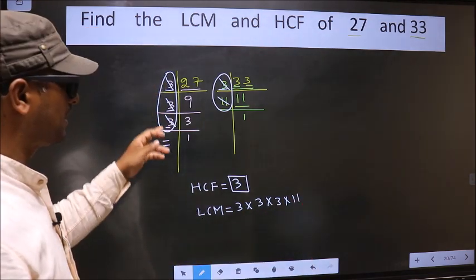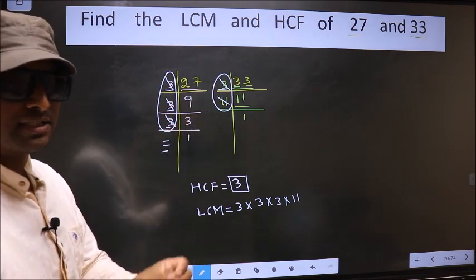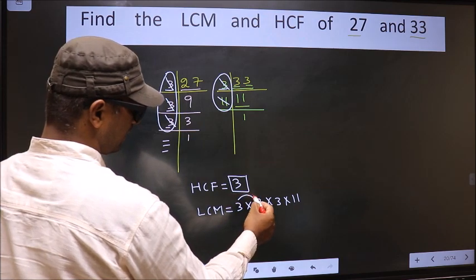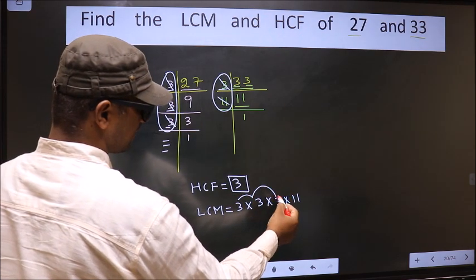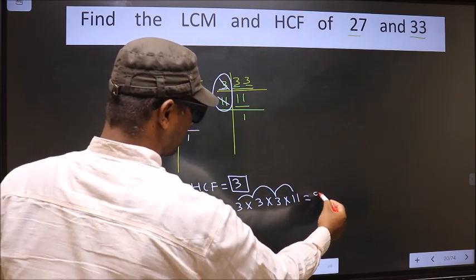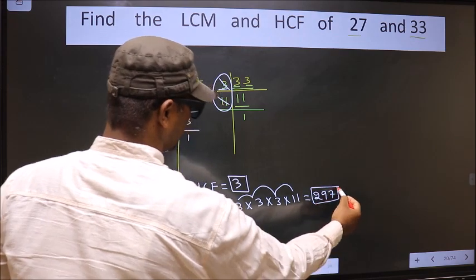Now, each number has been cut. So, our LCM is 3 into 3, 9 into 3, 27 into 11. So, we get 297 is our LCM.